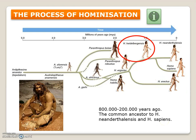Then we have the Homo heidelbergensis. This is very important for the Iberian Peninsula, because we have one of the most important archaeological sites of Homo heidelbergensis: Atapuerca. We have found hundreds of remains there, and we know that Homo heidelbergensis was the common ancestor of both the Homo neanderthalensis and Homo sapiens.